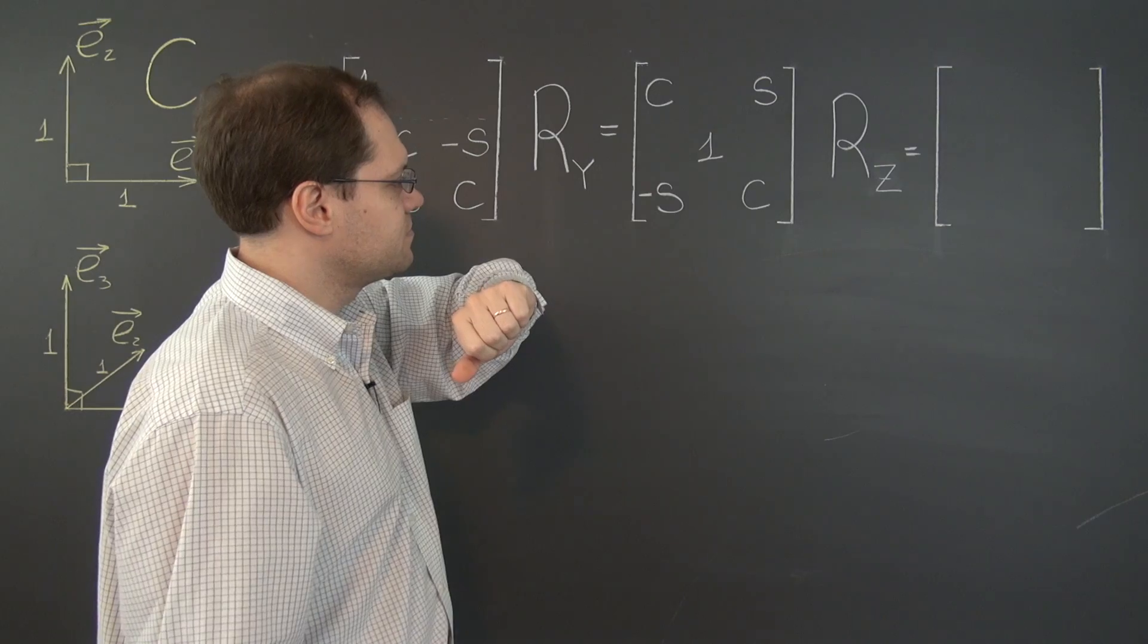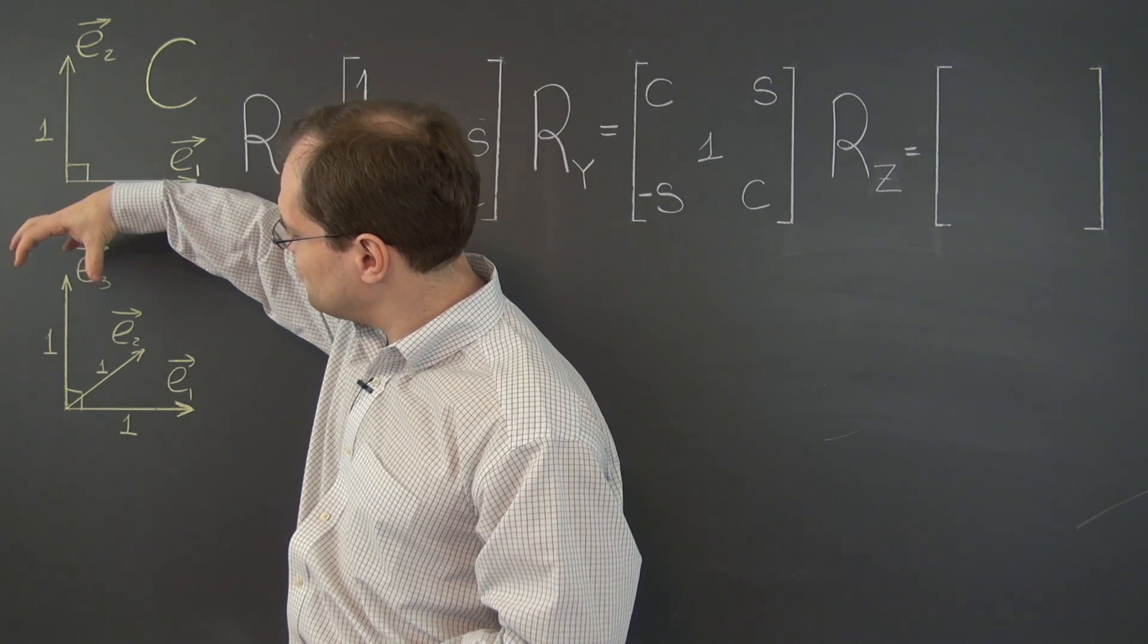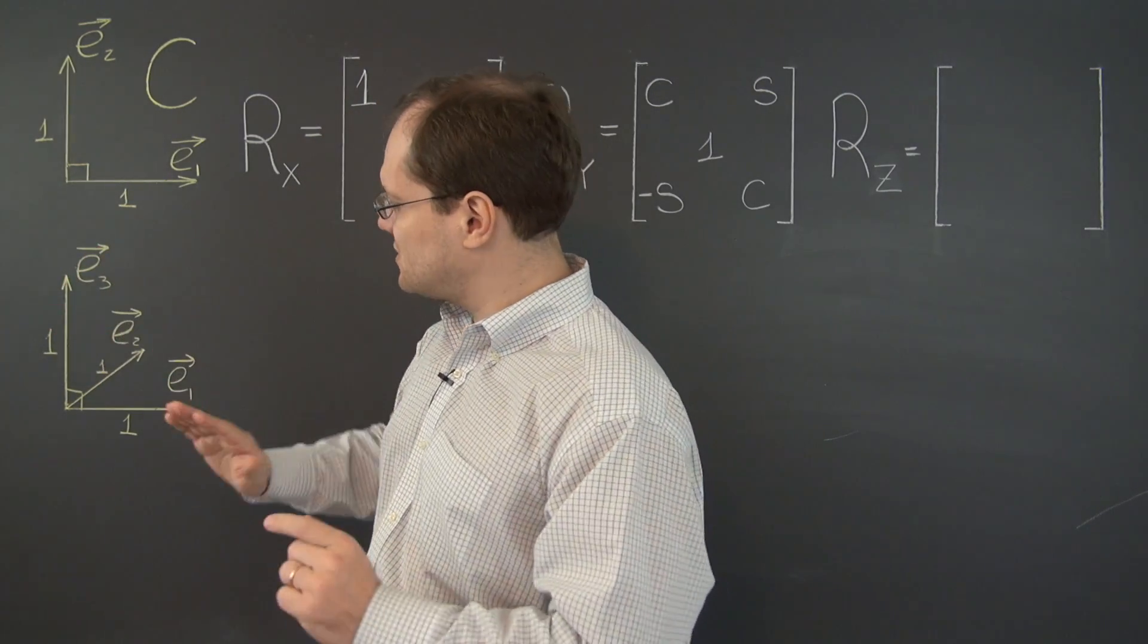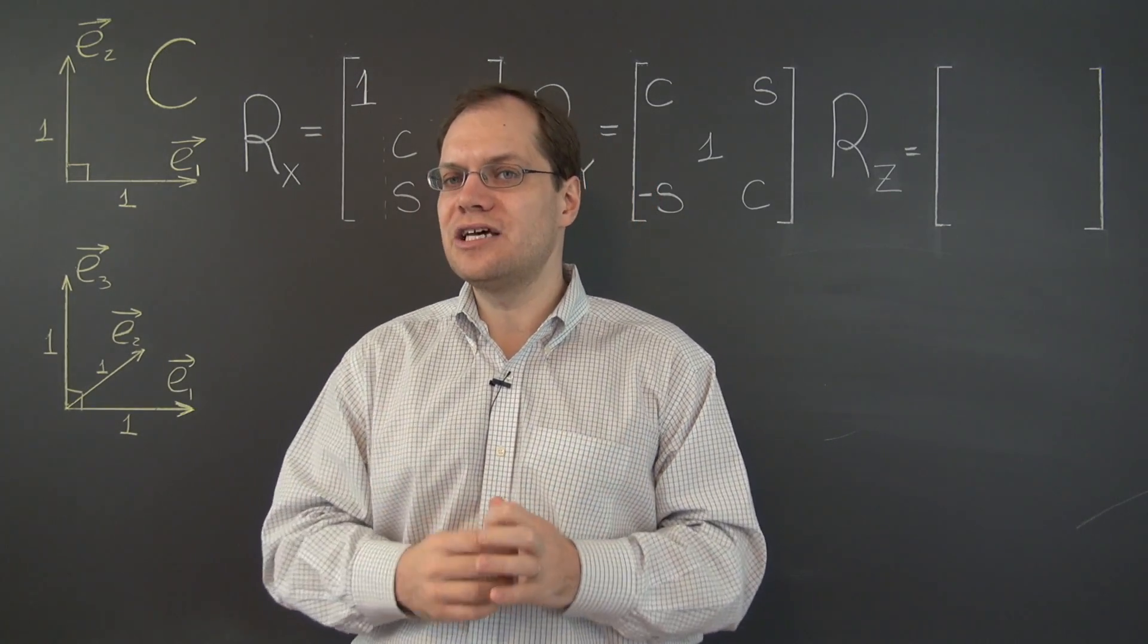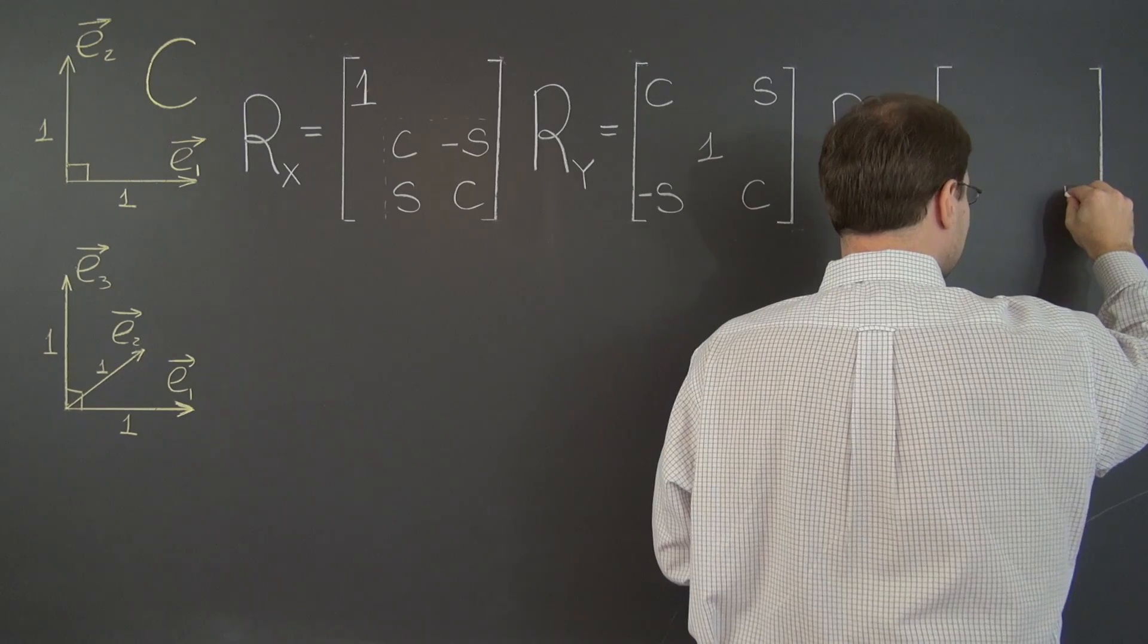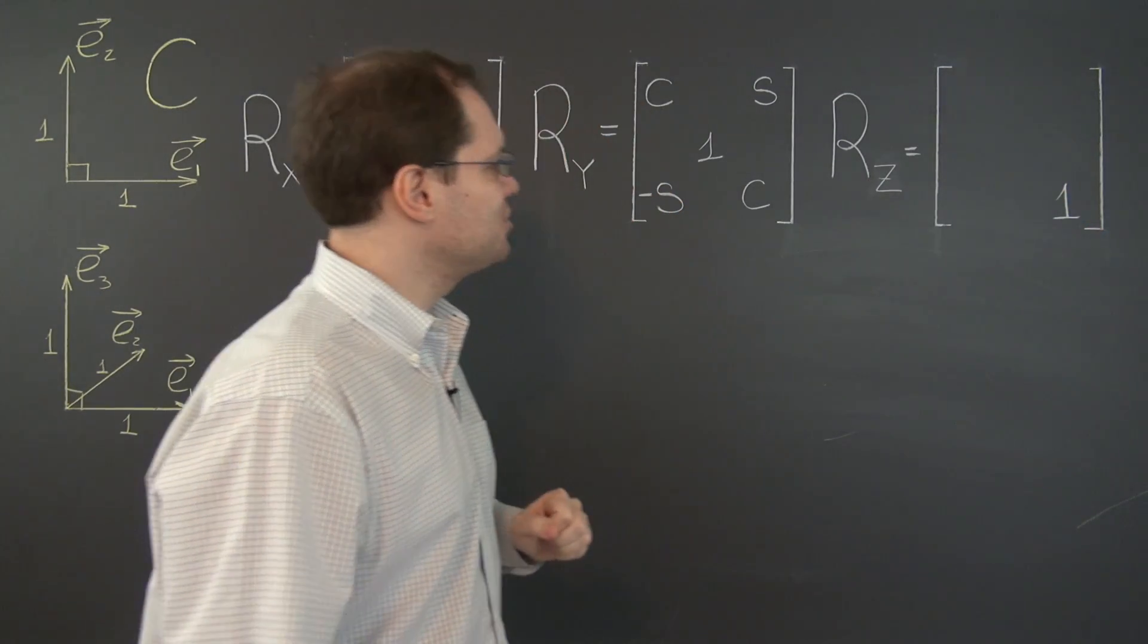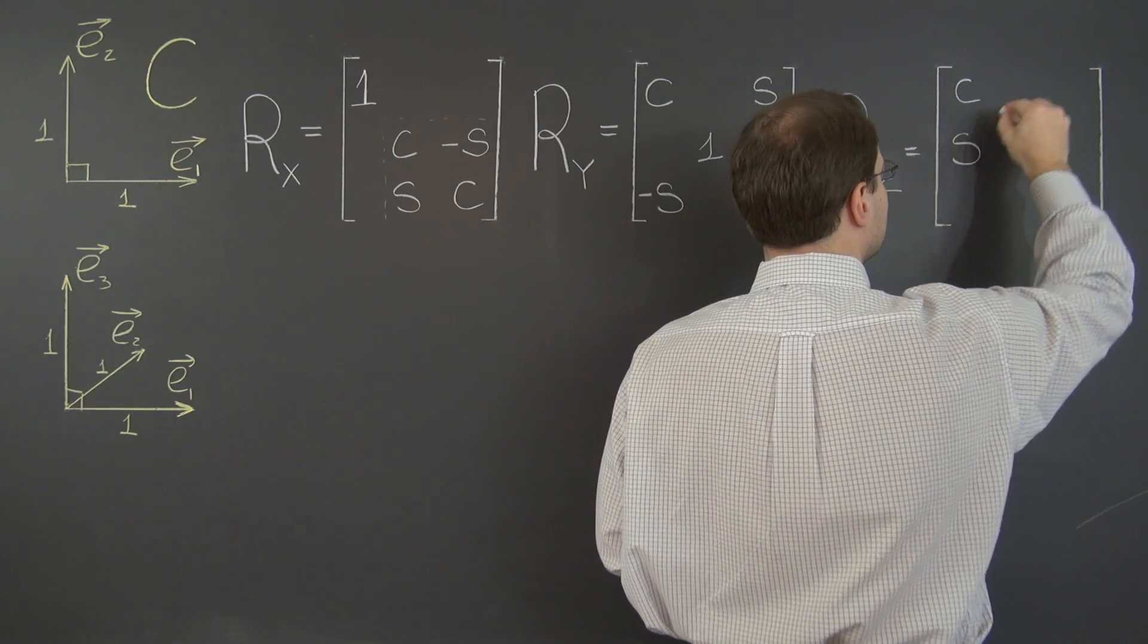Now moving on to Rz, Rz counter-clockwise with respect to the z-axis rotates E1 towards E2 when it's counter-clockwise. It's precisely the rotation that we've been discussing all along and that's the rotation that we know best. So, we have a 1 now in this place because it leaves the z component completely unchanged. Maybe this would have been a smart matrix to start with. Too late now.